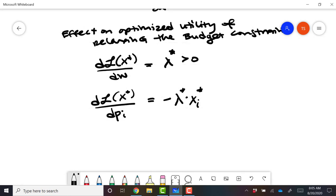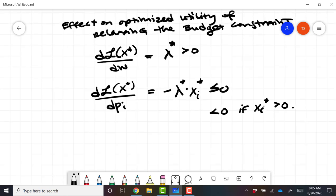This is less than or equal to zero, and it's less than zero if xi star is greater than zero. So this is an important thing to remember in terms of checking cases, because in general, increasing the price of a good makes you worse off. But it only makes you weakly worse off, because if the price of the good is such that you don't consume it anyway, then any further increases don't harm you.